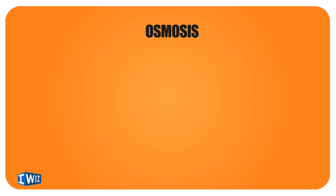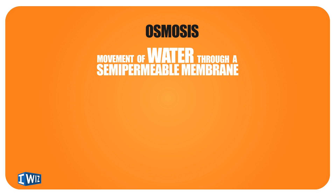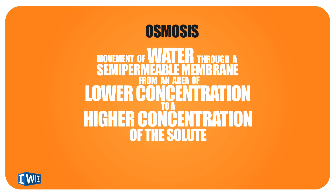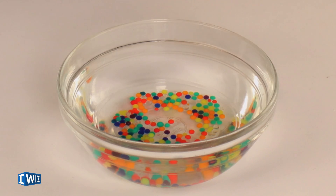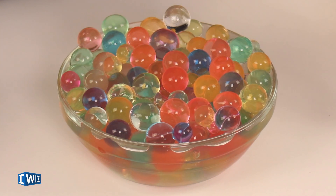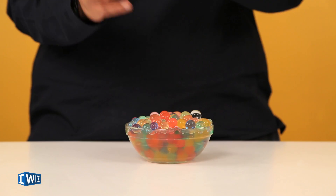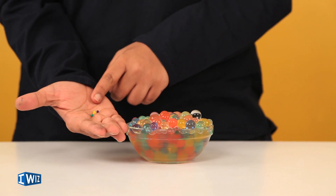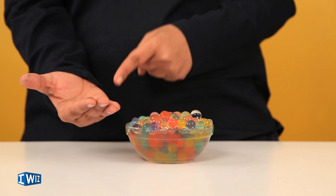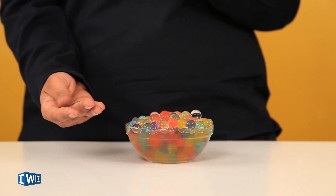Osmosis is defined as the movement of water through a semi-permeable membrane from an area of lower concentration to higher concentration. Here's what the Orbeez look like now after soaking in water for four hours — they were this small initially, and all the water has permeated through, making them grow to this size.